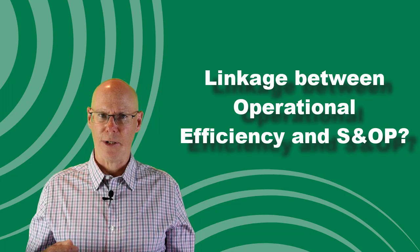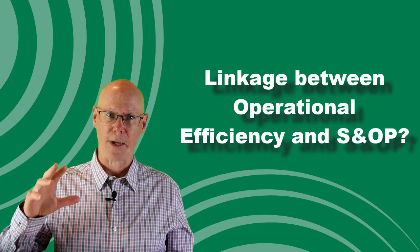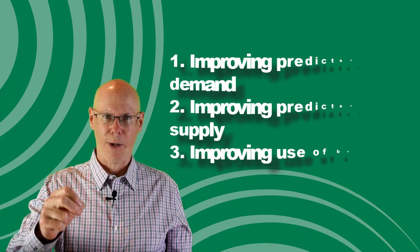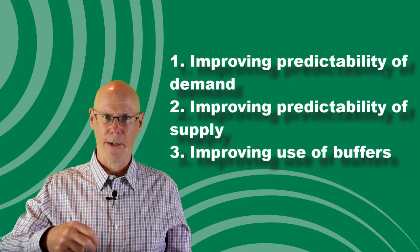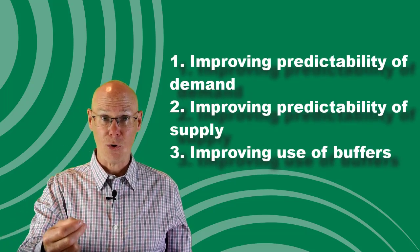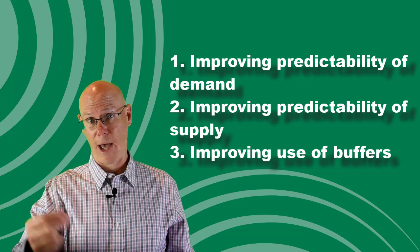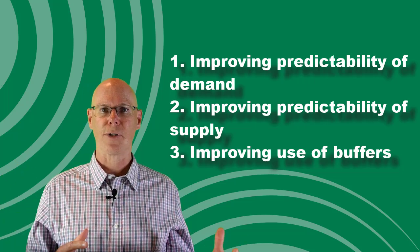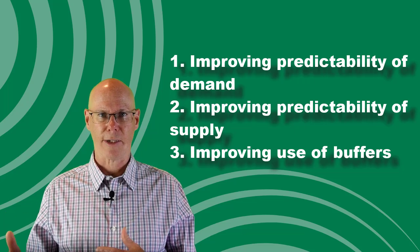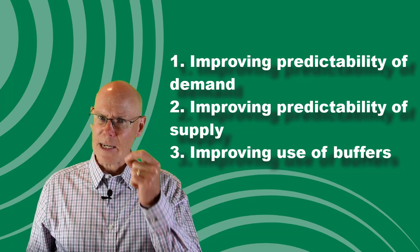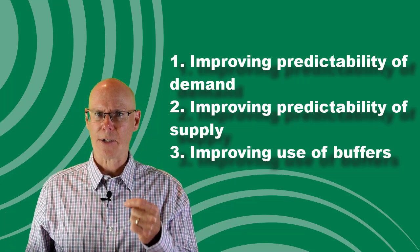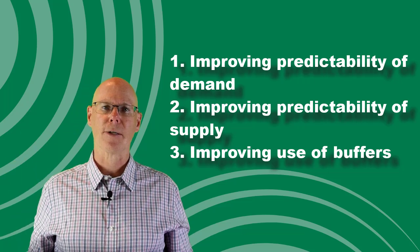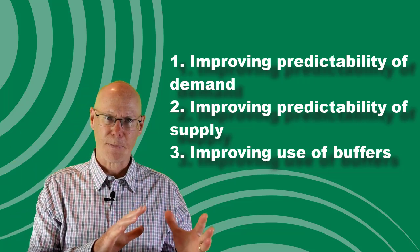So what is the linkage between operational efficiency and S&OP? In the introduction video to this series, I introduced three concepts that S&OP delivers: number one, improving the predictability of demand; number two, improving the predictability of supply; and number three, improving your use of buffers — inventory, lead time, and flex capacity. These three areas are what ultimately result in the financial benefit from the process.